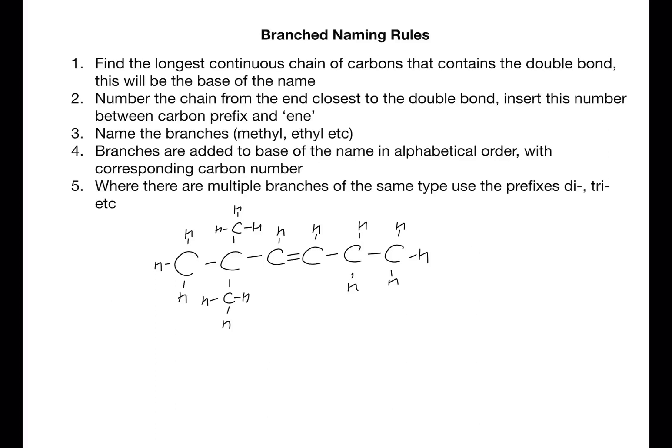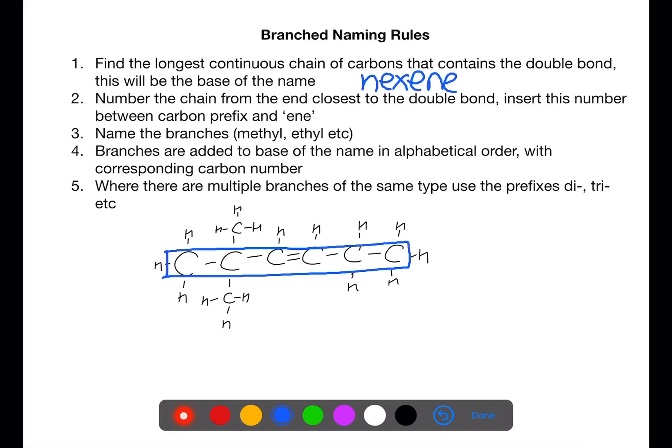Here we have a branched chain alkene. The first step to name this is to find the longest chain which contains the double bond. In this example the longest chain has six carbons. This would be hexene.